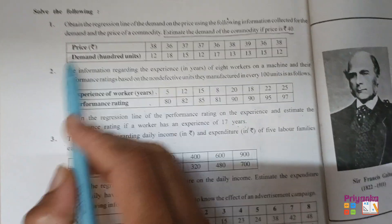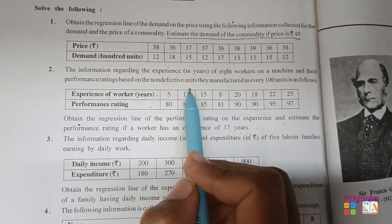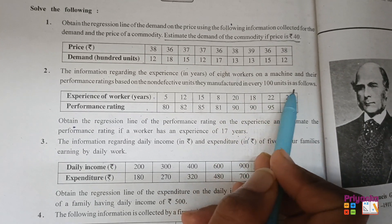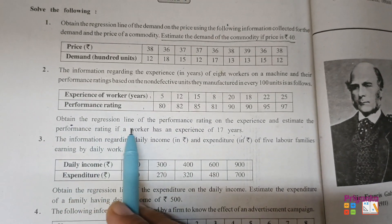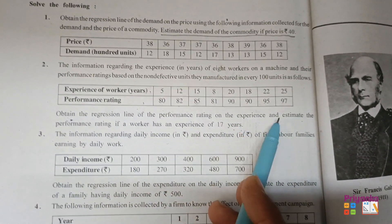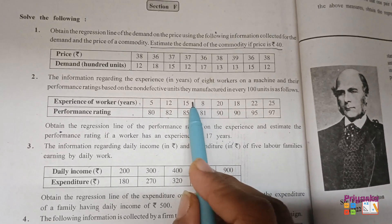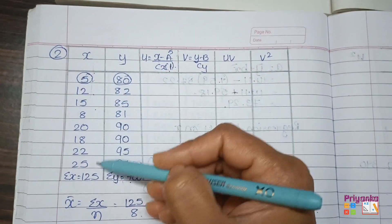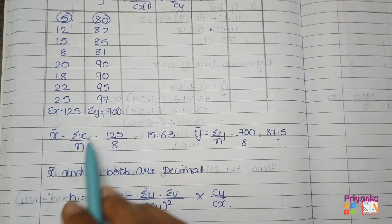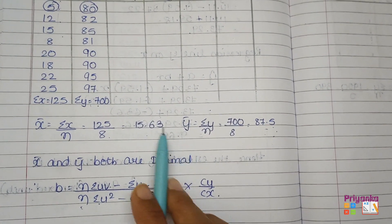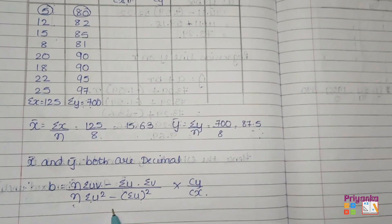Moving to the second question: information regarding the experience of 8 workers on a machine and their performance rating based on non-defective units manufactured per 100. Obtain the regression line of performance rating on experience, and estimate the performance rating if a worker has 17 years of experience. x-bar and y-bar are found — the value is not large but I will use the UV formula.